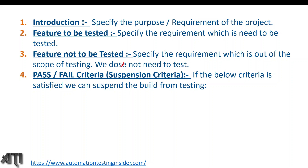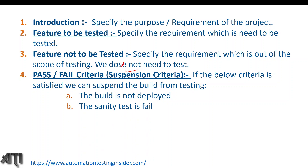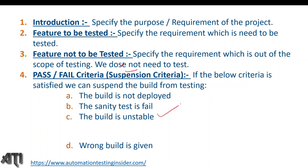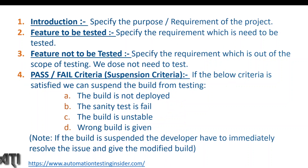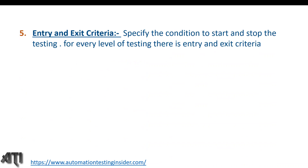Pass/fail criteria, also called suspension criteria: this defines when we can suspend the build from testing. The criteria include: if the build is not deployed we cannot test the application; if the sanity test fails; if the build is unstable; or if the wrong build is given. If the build is suspended, the developer must immediately resolve the issue and provide a modified build. These are the conditions under which we cannot proceed with further testing.